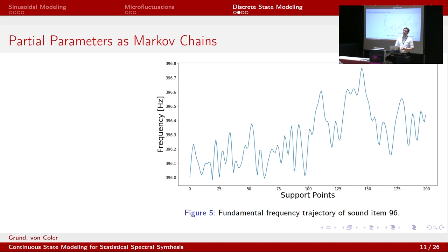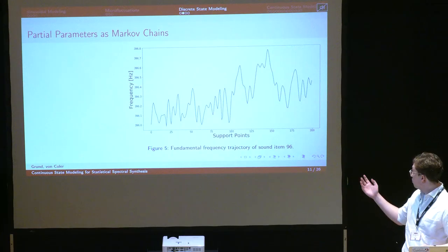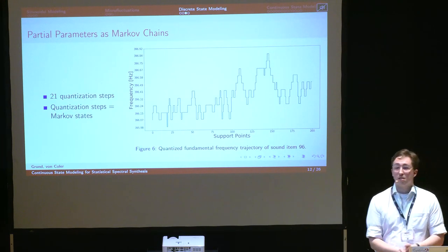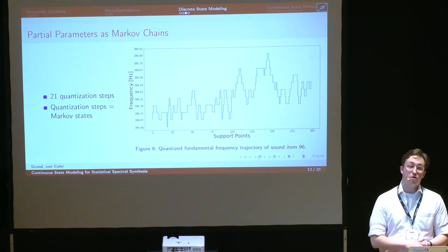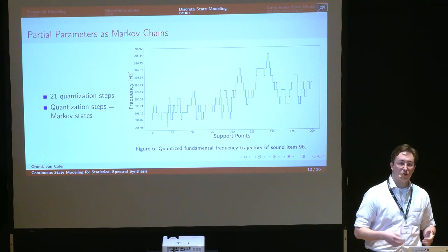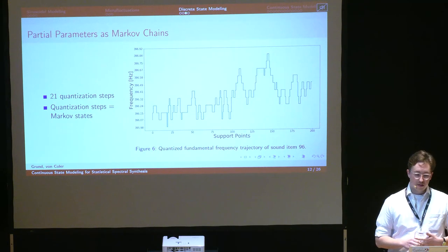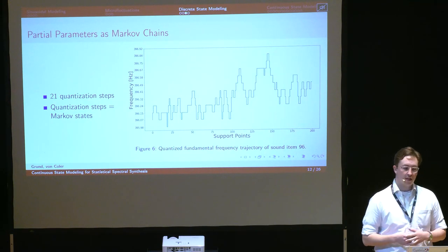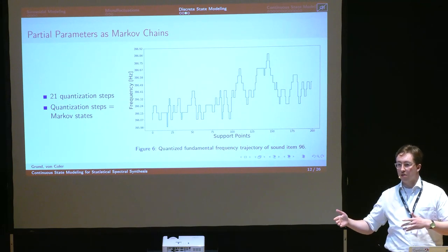There are different ways of modeling fluctuations in sound parameters. I will be introducing the discrete-state modeling using Markov chains. It is the predecessor to our continuous-state modeling and serves as preliminary work. Here we can see an excerpt from a single frequency trajectory of the fundamental frequency of sound item 96, and jitter is clearly visible. The next step in the process is the quantization of the trajectory, which works the same way for frequency and amplitude trajectories alike. In discrete-state modeling, we used 21 discrete distance states, and these quantization steps are used as states in a Markov chain — a sequence of states in which the probability of each following state is dependent on the previous state.